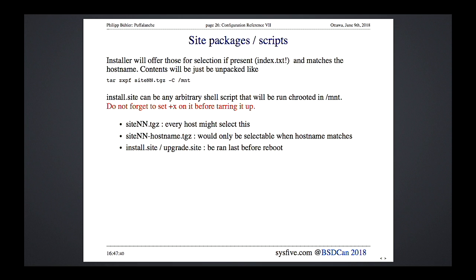A site package is a tar.gz file that gets unpacked relative to slash-mount, which is the future root filesystem during install. Inside it you can add an install.site file — any script (I typically use sh, but Perl or anything already installed works). This is really important: the installer executes this file, so please set the execute bit. If you don't, nothing will happen and it will not even complain — it silently does nothing.